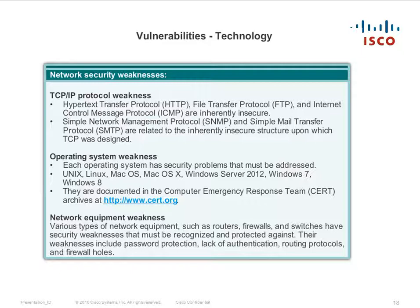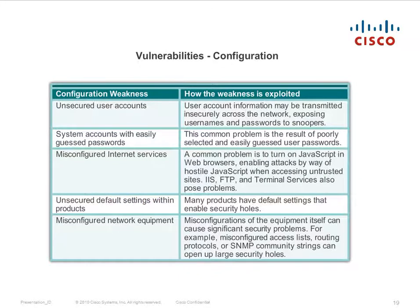Network equipment weaknesses: various types of network equipment such as routers, firewalls, and switches have security weaknesses that must be recognized and protected against. These include password protection issues, lack of authentication, routing protocol vulnerabilities, and firewall holes. There are also configuration vulnerabilities such as unsecured user accounts, system accounts with easily guessed passwords, misconfigured internet services, unsecured default settings within products, and misconfigured network equipment.